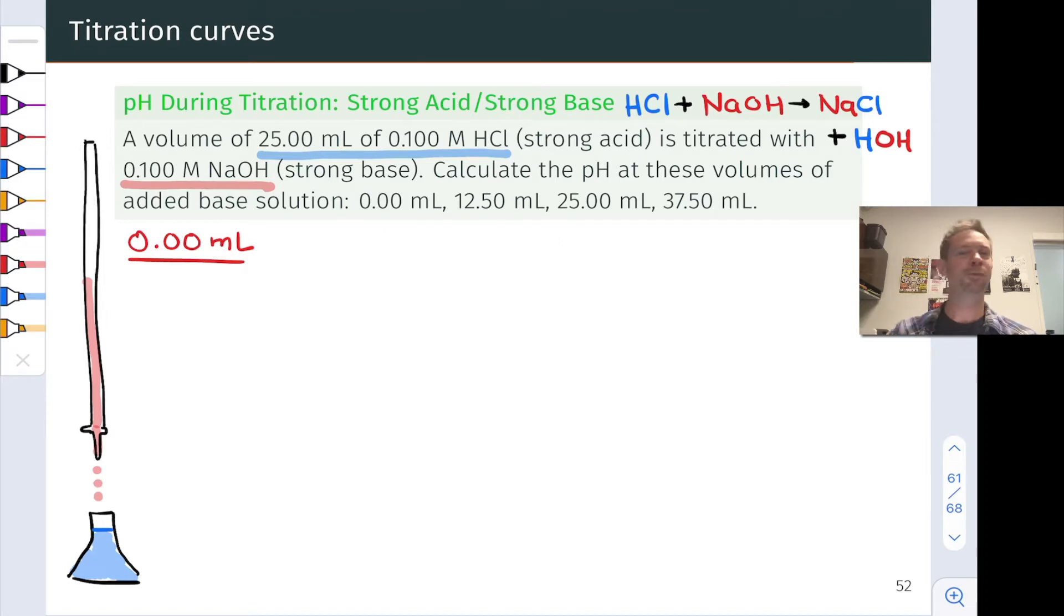First, no base added. What have we got? We got a solution of HCl in water, where the hydronium concentration, due to complete dissociation of the strong acid HCl, is 0.1 moles per liter. Apply the definition of pH. The pH is initially 1. Very straightforward.